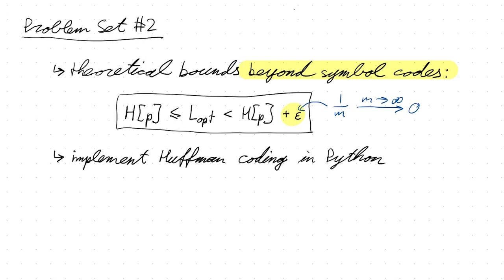Later in the course, you will learn about so-called stream codes, which can also come very close to the theoretical lower bound and are more efficient, with only linear complexity in the size of the message. Going back to symbol codes, on the problem set you implemented a method called Huffman coding, which you can think of as an alternative to Shannon coding.